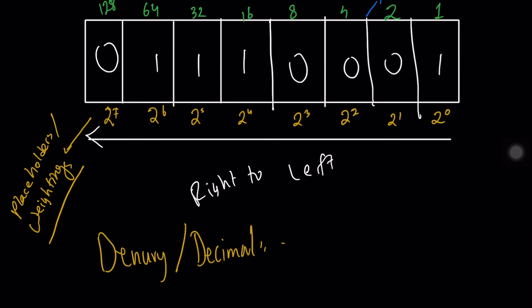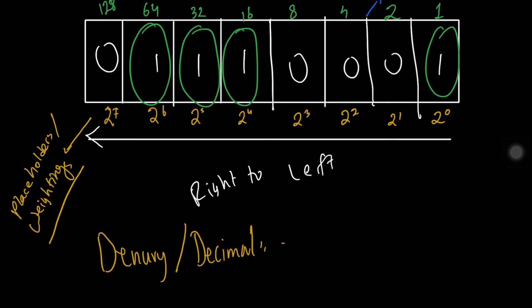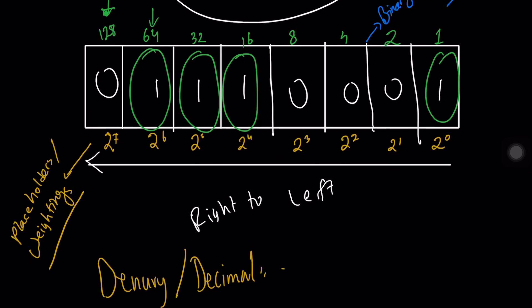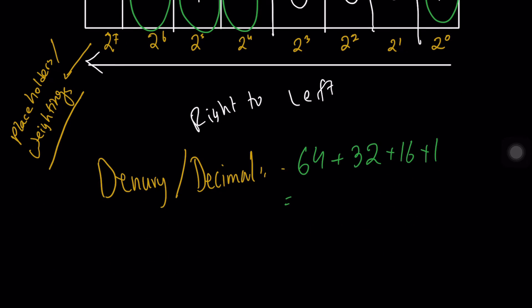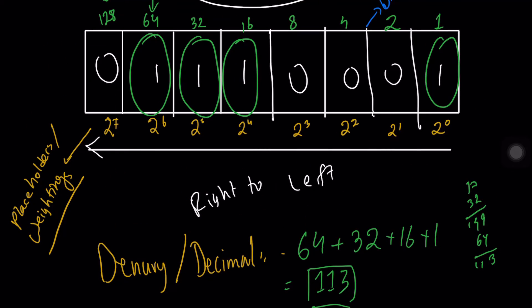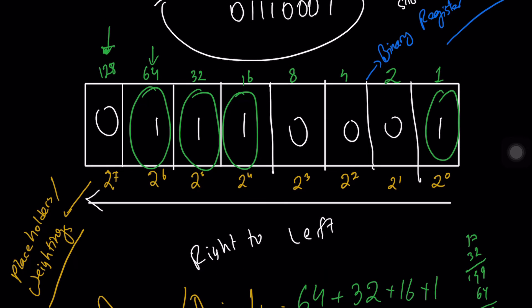Once the values are assigned, take the values that are 'on' — that is, where there is a 1. The 1s correspond to place values 64, 32, 16, and 1. Adding these together: 64 plus 32 plus 16 plus 1 equals 113. So 113 is the denary number that the computer has stored in its binary register.